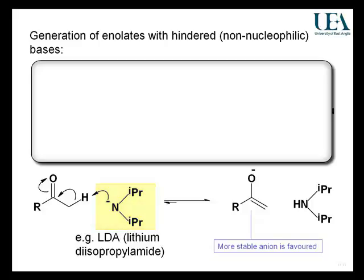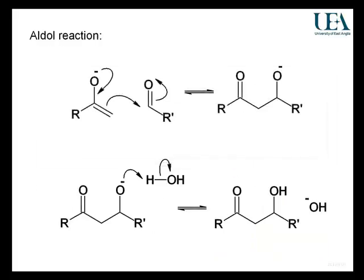Then, when you've generated the enolate — and not before, so you've used up the LDA — then you add the aldehyde. Aldehydes are more reactive than ketones as electrophiles, so this then picks up the enolate and produces the new carbon-carbon bond.